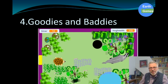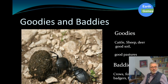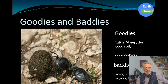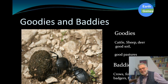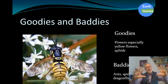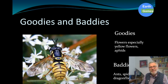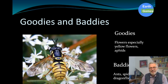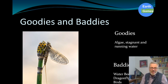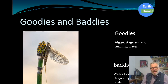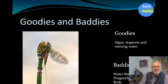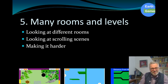Here are some goodies and baddies for the different insects. For dung beetles, good things include any herbivore that produces dung and good quality pastures; baddies are crows, foxes, badgers, bats, owls, and pesticides. For hoverflies, they need lots of flowers, especially yellow ones and aphids; baddies are ants, spiders, wasps, dragonflies, and pesticides. For mayflies, larvae need algae and plant matter in water; baddies are water beetles, dragonflies, fish, birds, and pollution.